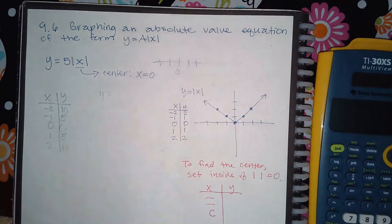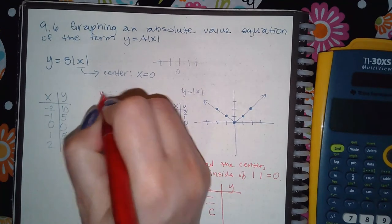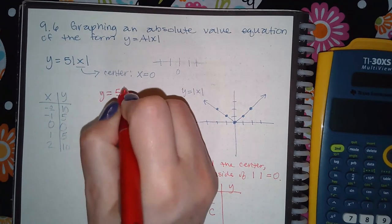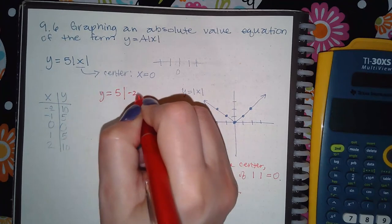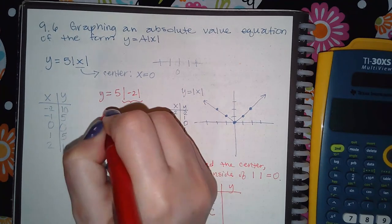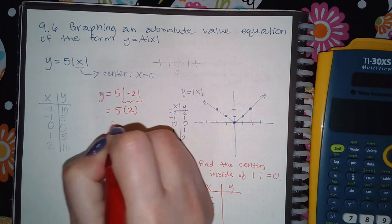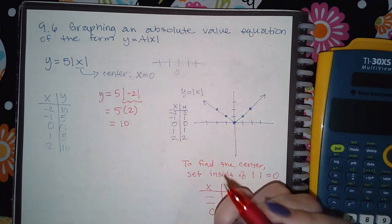I'm just not writing it down because it's pretty straightforward. So I'm saying y equals five times, let's say, negative two. And then I'm taking the absolute value of negative two, which is positive two, and then I'm multiplying that, and that's how I got 10.